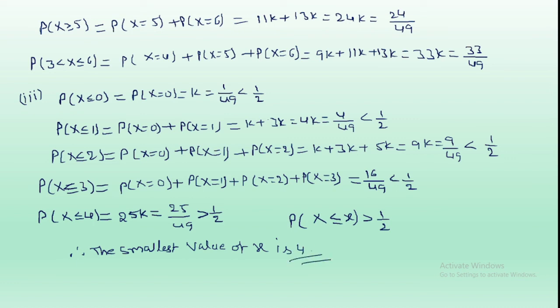This is the procedure by which we can determine the value of K, the probability values, and the smallest value of X for the given probability function table.